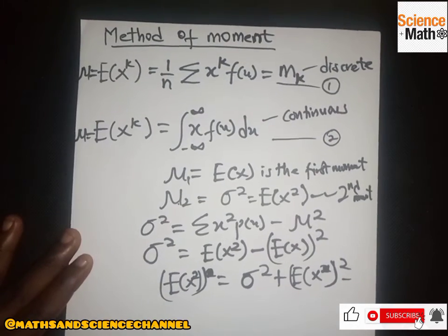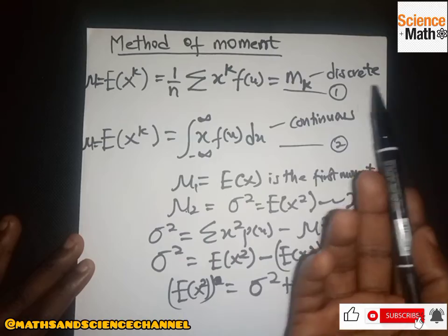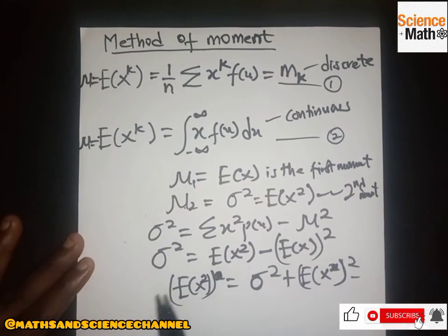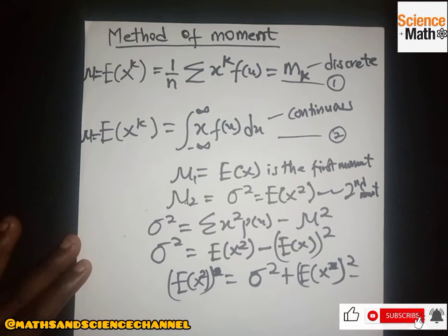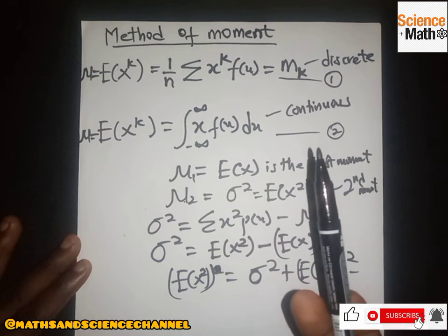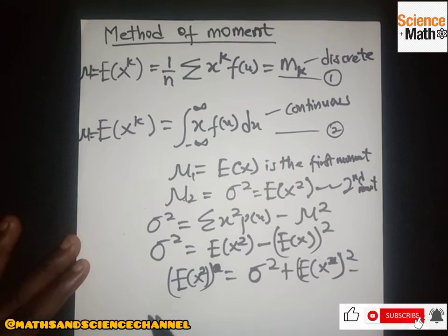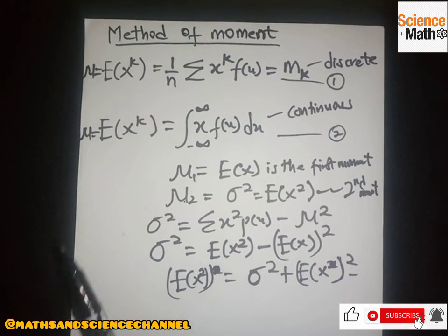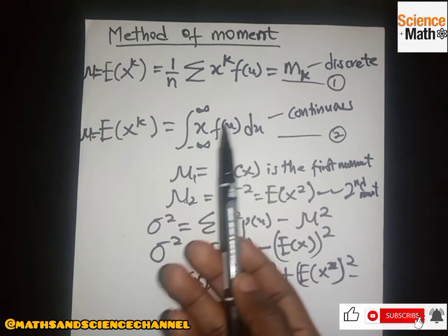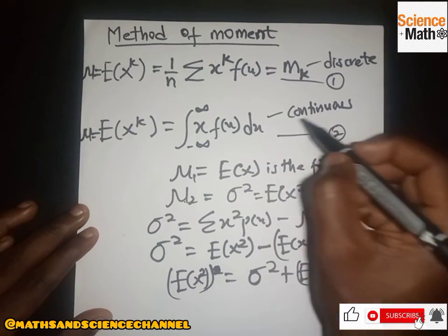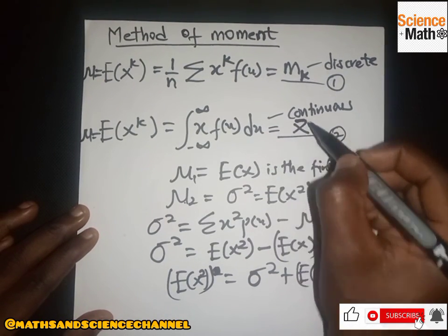So that is how the method of moments works. In a discrete case, you are given X values — sum them and divide by the number of X values for the first moment. For the second moment, square each X value, sum them, and divide by the number of values. In the continuous case, it is solved like finding the expectation of a probability density function — you integrate x times f(x) over the given limits, and equate that to the mean mu.